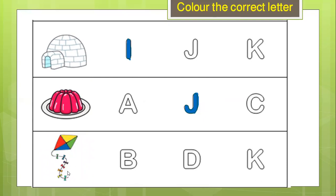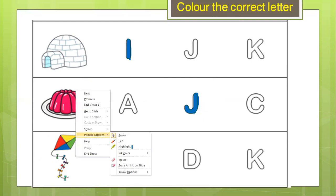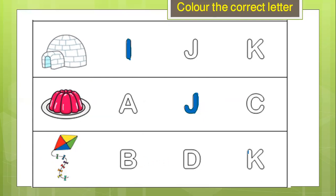Next. It's a kite. I know. We fly a kite when it's windy. It's a kite. So K for kite. Let's color the letter K. Is this a letter K? No. Next one. Is this a letter K? It is not. It's the letter D. How about the last one? Is that the letter K?